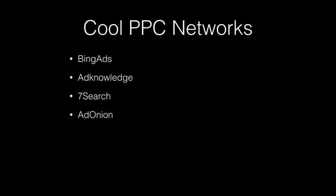Ad Onion is a network where they can publish and push your ad out to a whole bunch of different sites, and you control your pay-per-click all from one place. Add-On Network is another network that can push your ad across multiple hundreds of different sites across the internet. You track everything from one place — you log in and see how your ad is performing and where it's being advertised.